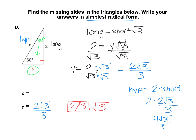So for your x value, the answer is 4 root 3 over 3. When you type that in your interactive notebook in the text box, you can just use 4 slash 3 for four-thirds, and then the root 3 next to it.